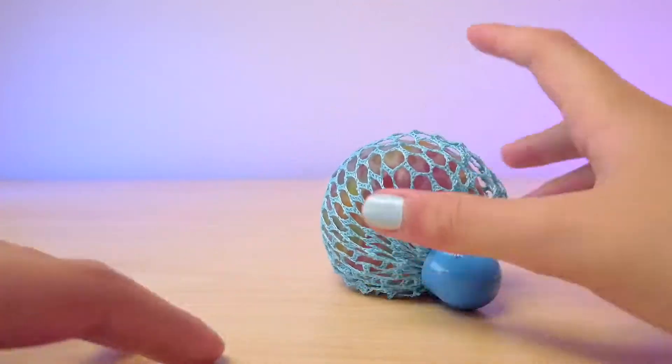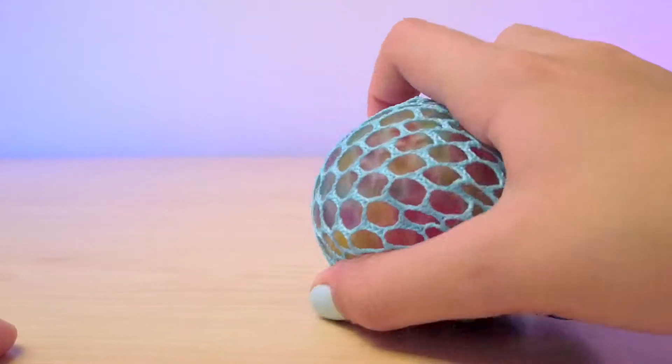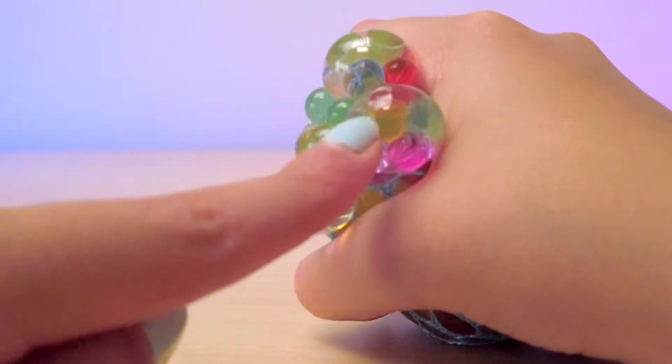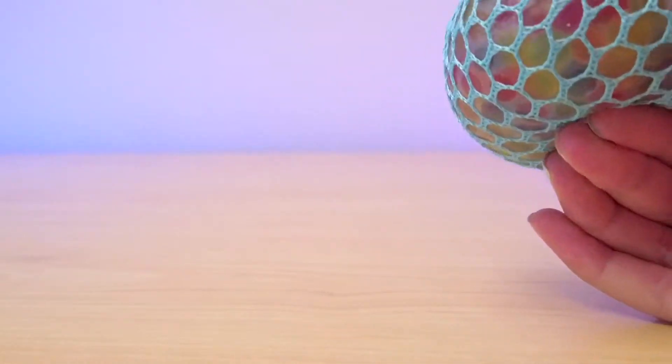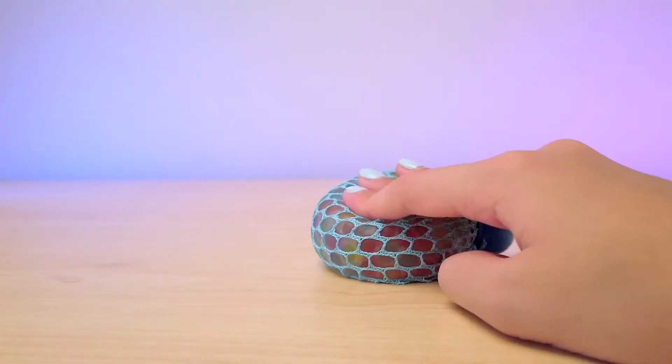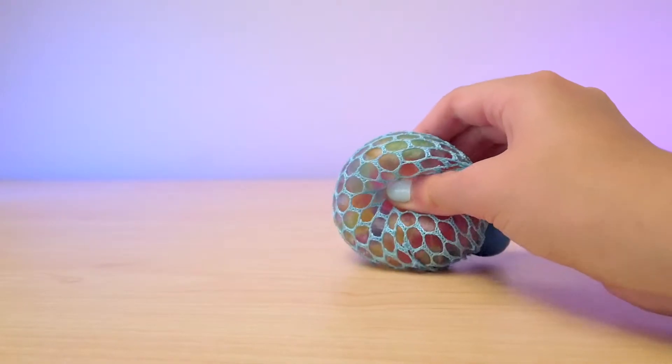This one is filled with Orbeez. Orbeez are these little kind of water bead balls. If you guys could see these little colored balls inside, these are like rainbow colored, which is pretty cool. And it's pretty squishy too, actually.